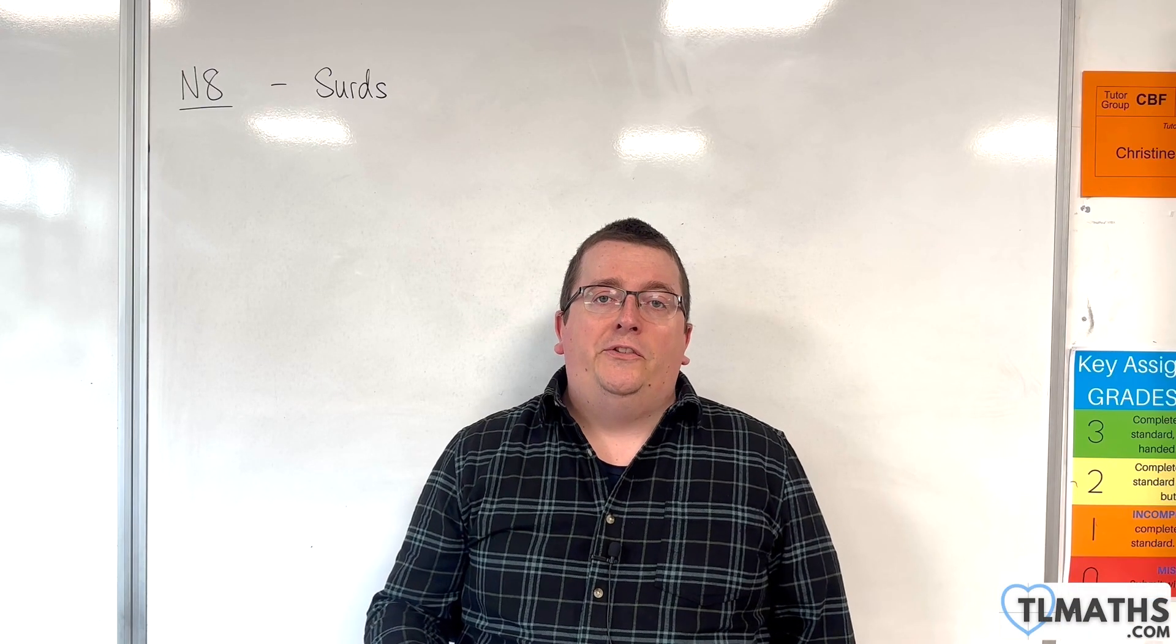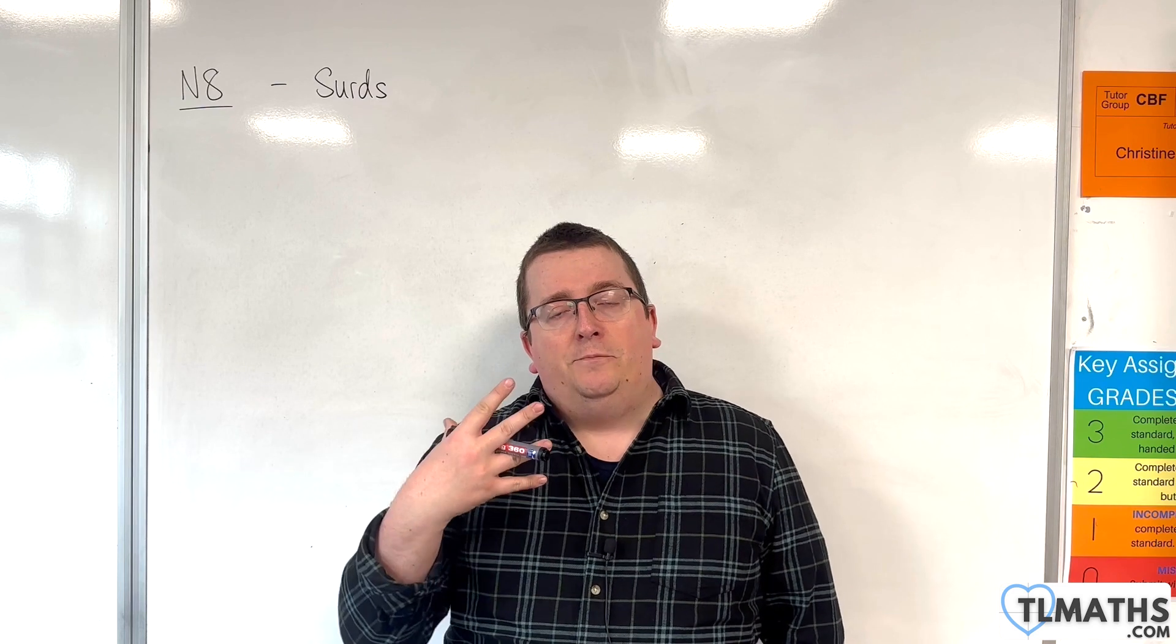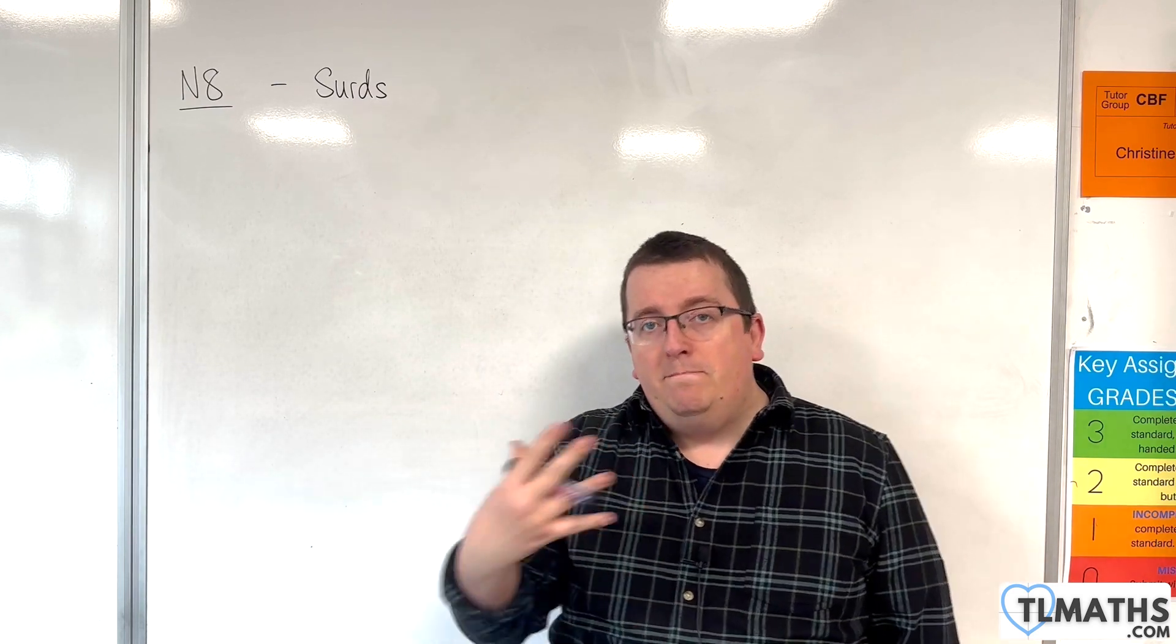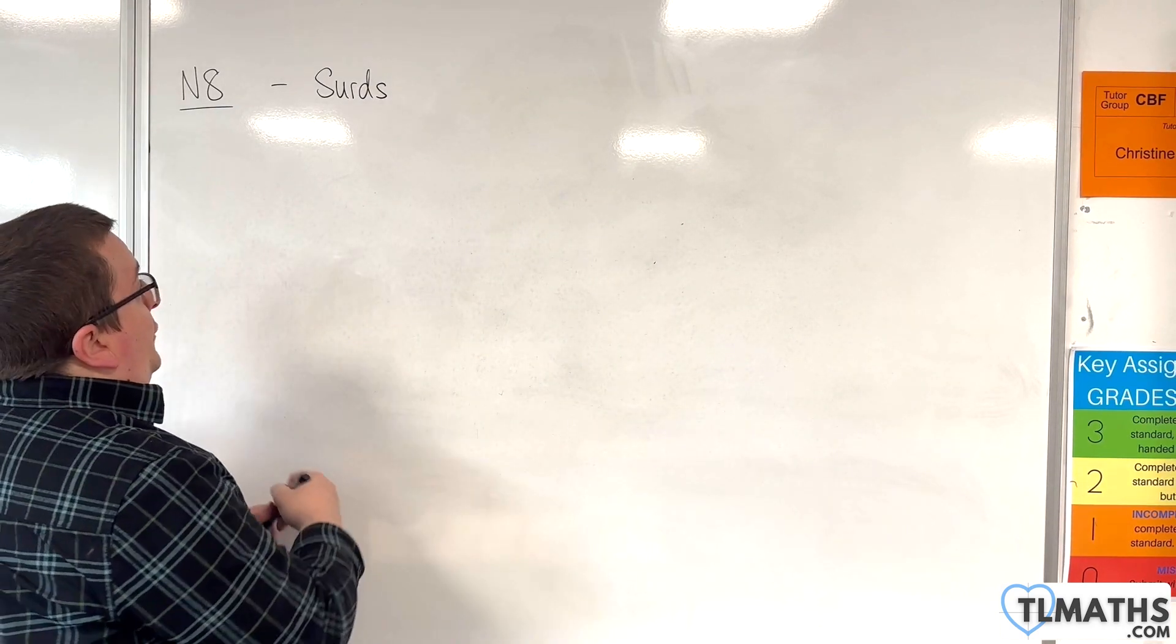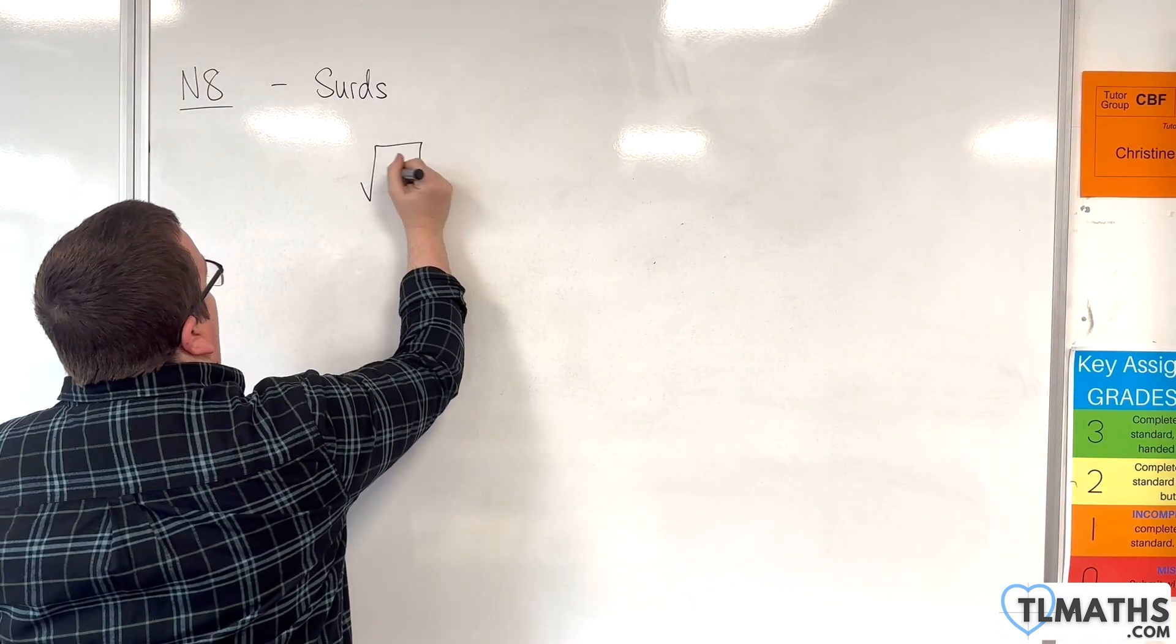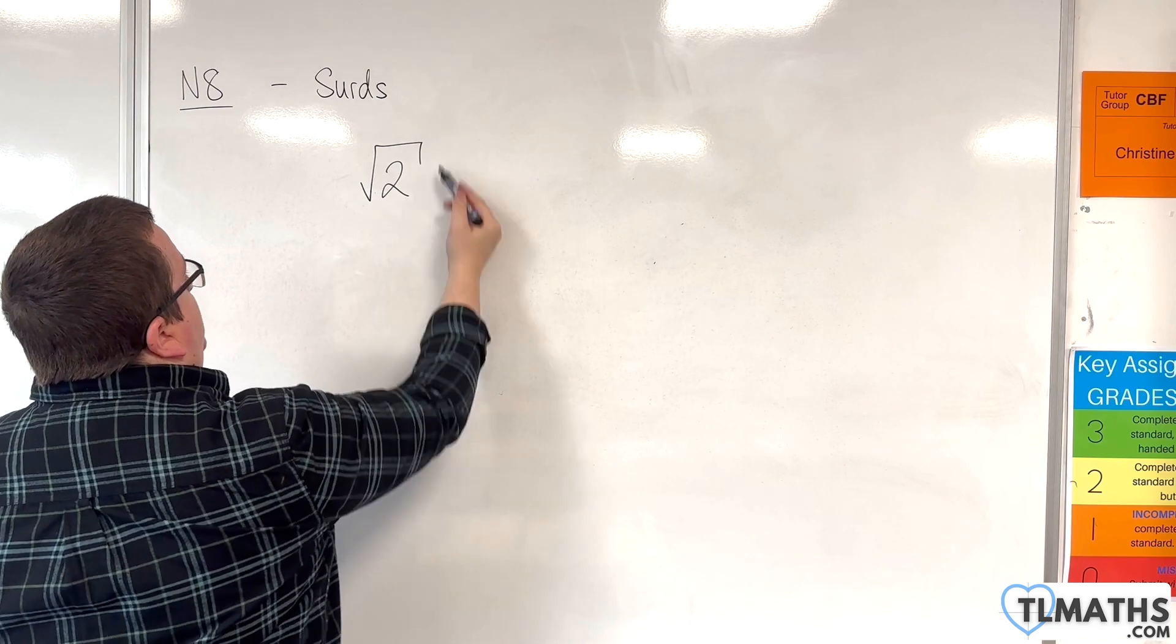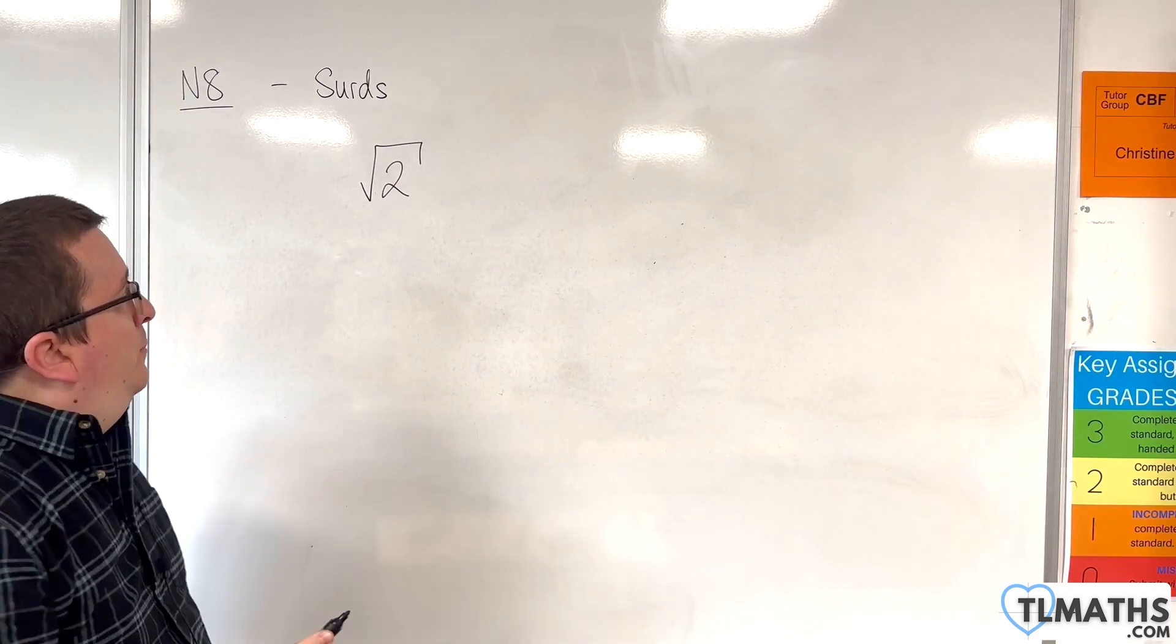In this section we're going to be considering thirds, and before we continue we need to know what we mean by a third. A third is an irrational number. The square root of two is an excellent example of this.